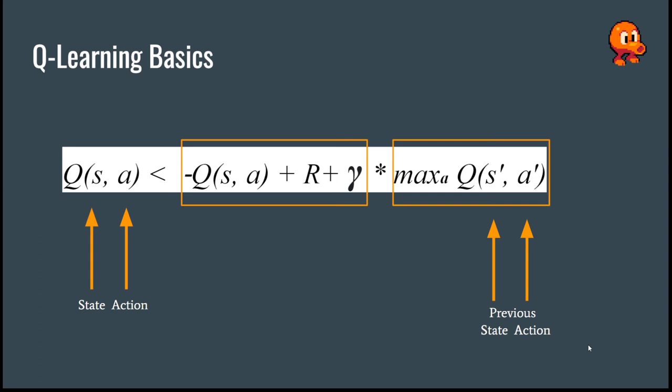Q values are updated through an episode as the following algorithm that we see in front of us, and this is the one that I've implemented, where S is the current state, A is the current action, S prime is the next state, A prime represents the action from the S prime state, and where we have gamma, which represents the discount factor for the Q values.